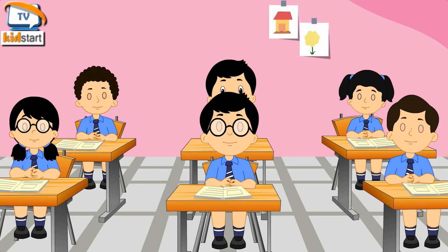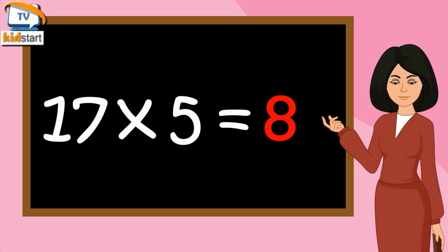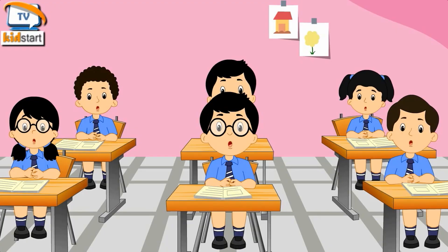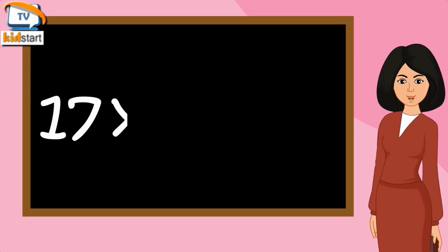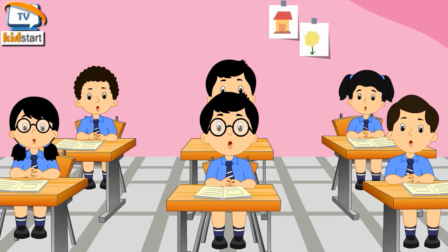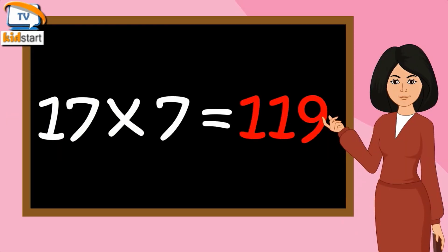Seventeen fours are sixty-eight. Seventeen fives are eighty-five. Seventeen sixes are one hundred two.